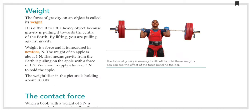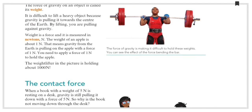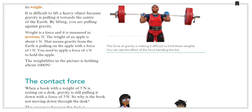The gravity from the Earth is pulling on the apple with a force of 1 Newton. That means you need to apply a force of 1 Newton to hold the apple. The weight lifter in the picture is holding about 1000 Newtons.